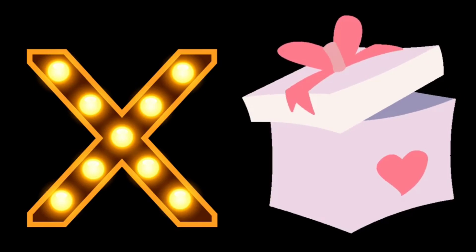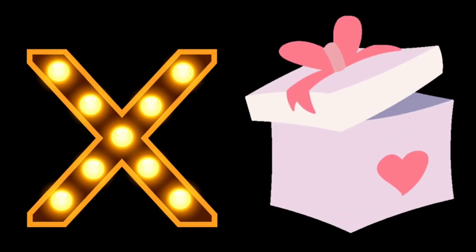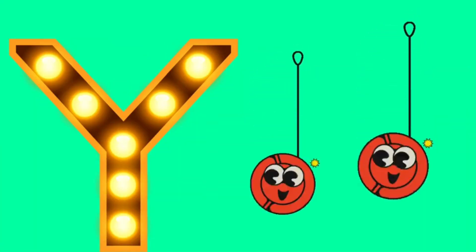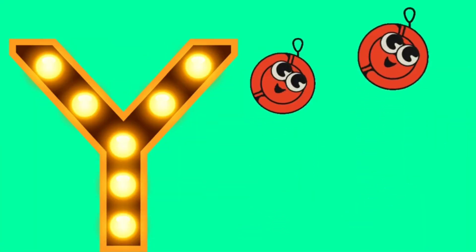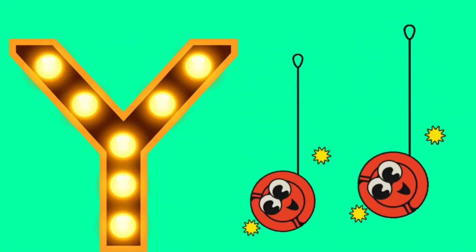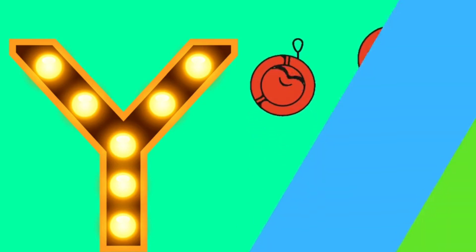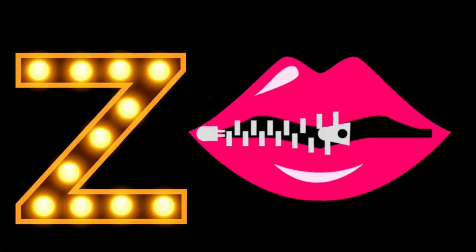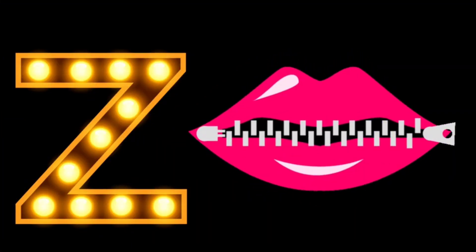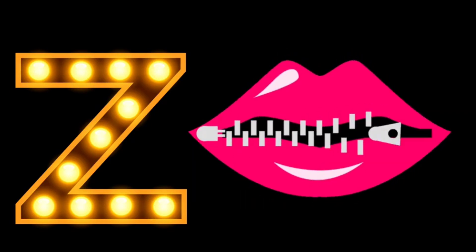X for box. Box means the box. Y for yo-yo — in Urdu, yo-yo. Z for zip — in Urdu, zip.